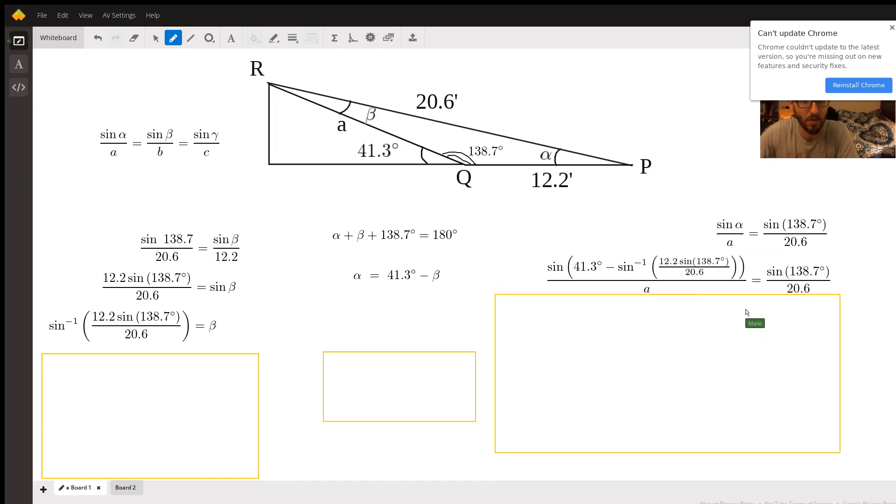When I plug in the values for alpha, we get this whole nasty looking thing over here. And remember, alpha is equal to, or excuse me, is 41.3 minus beta. There's my 41.3 and beta was this whole thing over here, which we've now placed right here.